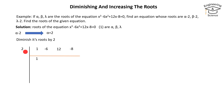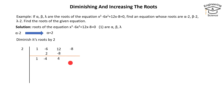How many times does 2 go into 1? Nothing, so we write 1. Then 1 multiplied by 2 equals 2. The sum of minus 6 and 2 equals minus 4. Then minus 4 multiplied by 2 equals 8. The sum of 12 and 8 equals 4. Then 4 multiplied by 2 equals 8.